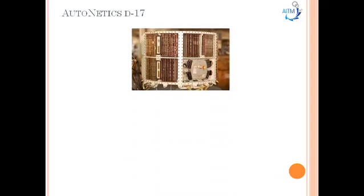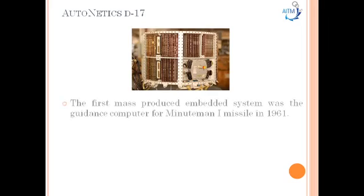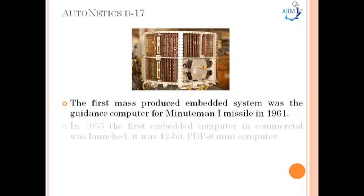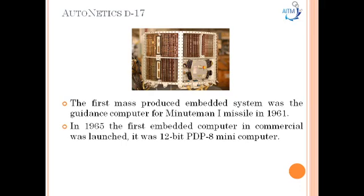Another embedded system in history is the Autonetics D-17. In the year 1961, a crucial military project was initiated — the Minuteman 1. The Autonetics D-17 Guidance Computer was designed for it, and it was the first embedded system to be produced in large quantities. Then in the year 1965, the first commercial embedded system was launched — a 12-bit PDP-8 minicomputer.